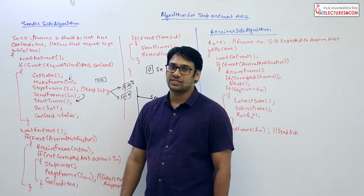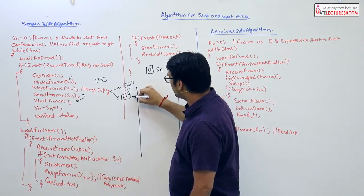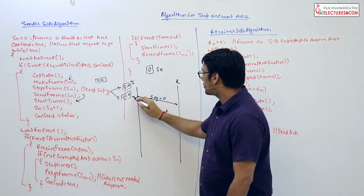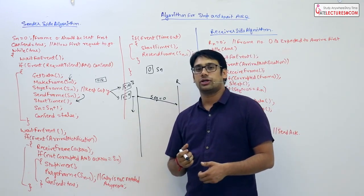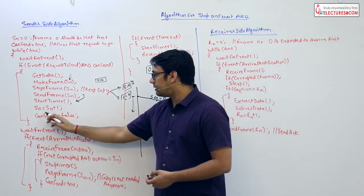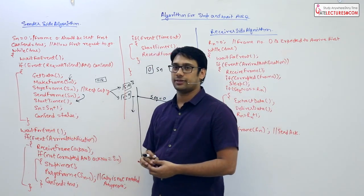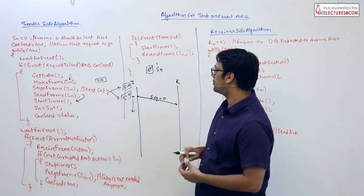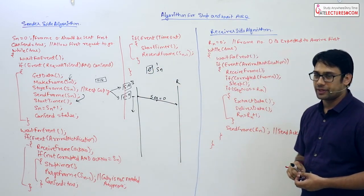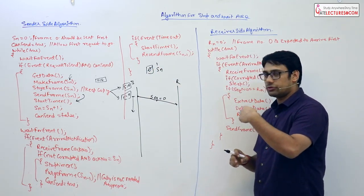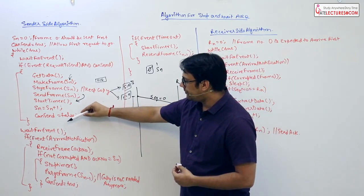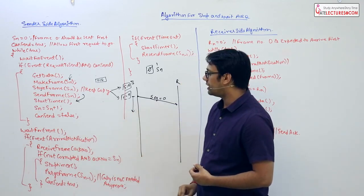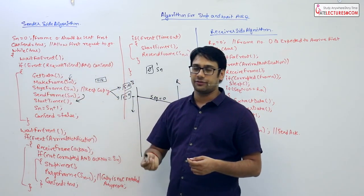As soon as we send the frame, we immediately start a timer on the sender side. This clock ensures we can detect a timeout. At the same time, we increment SN from 0 to 1 so that the next data packet will have sequence number 1. Then we set can_send equal to false.